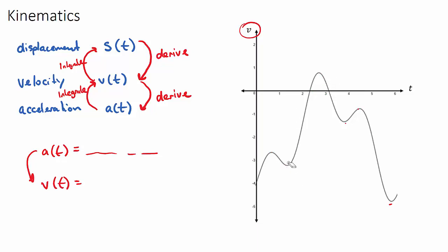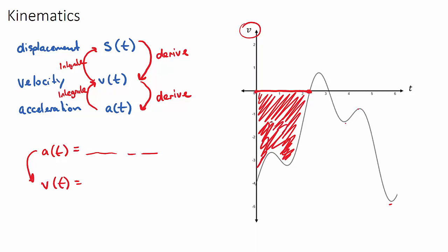Another common question is: what is the total distance traveled? When given a velocity curve, the total distance is related to the area under the curve found by integration. The area below the x-axis gives a negative value, which makes sense because the object was traveling backwards. Then there's a positive area where it travels forwards, followed by another negative area where it travels backwards again.